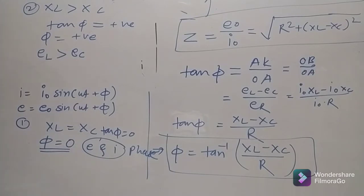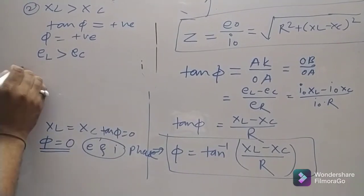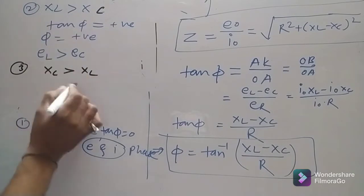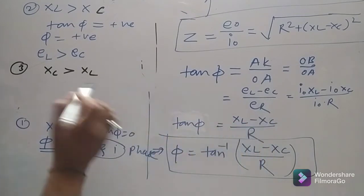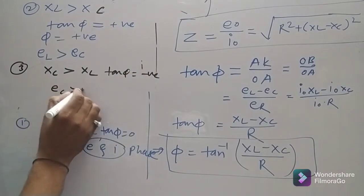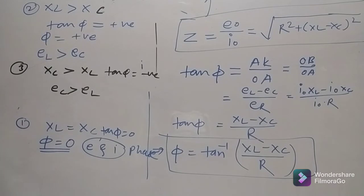Case 3: XC > XL. Then tan φ is negative, so φ is negative. The voltage across the capacitor is greater than across the inductor, and the circuit is said to be capacitor-dominated. The phasor triangle from the diagram confirms the value of tan φ in each case.